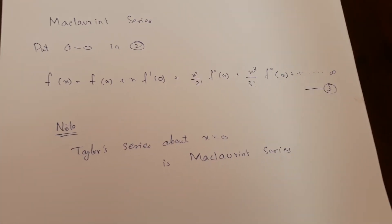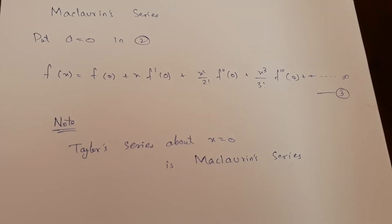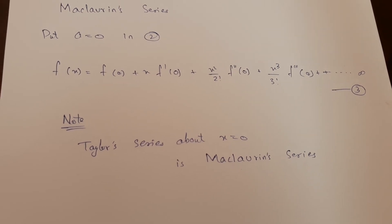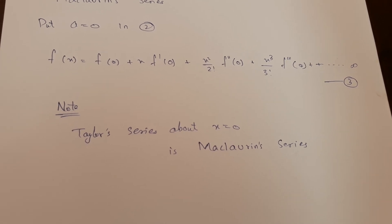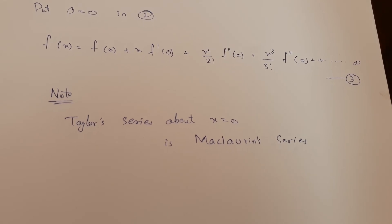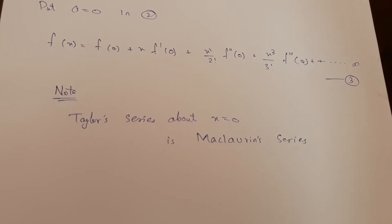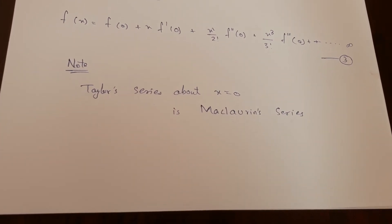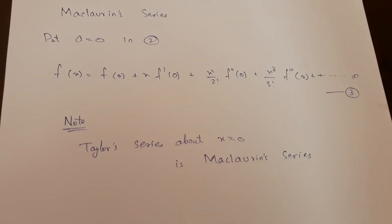As we have seen Taylor series in powers of (x - a), if we put a = 0 in that series, we get: f(x) = f(0) + x·f'(0) + (x²/2!)·f''(0) + (x³/3!)·f'''(0) + ... to infinity. Note: Taylor series about x = 0 is the Maclaurin series. Make sure to practice this one.